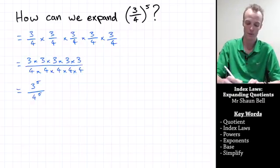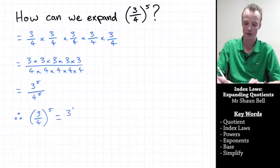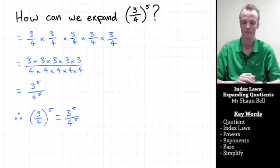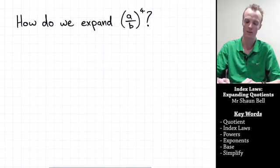So therefore, what we've found here is that the quotient of 3 over 4 all raised to the fifth power is equal to 3 to the fifth power over 4 to the fifth power. So let's have a look at another example, this time using unknowns.